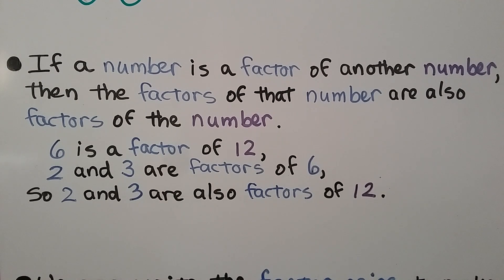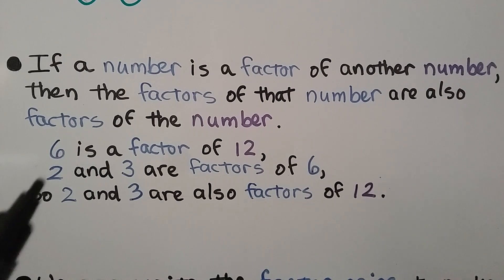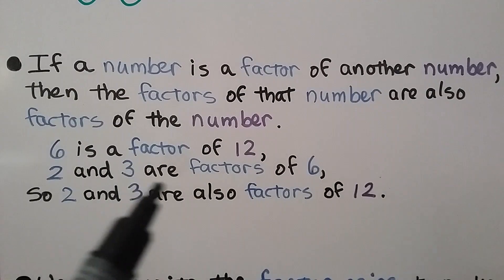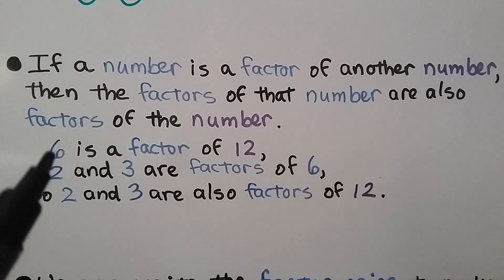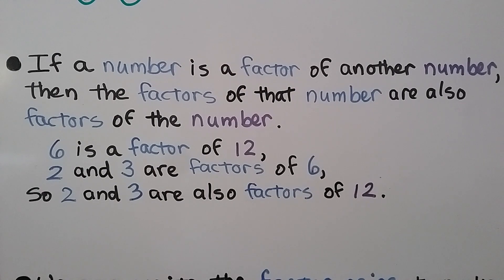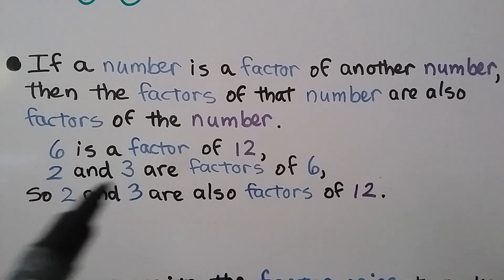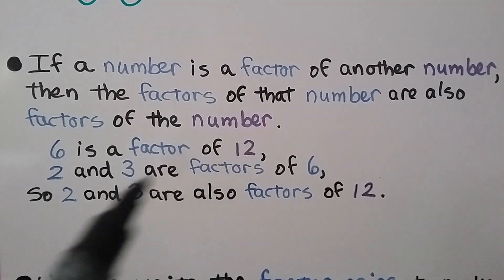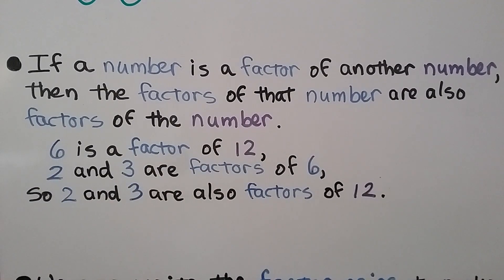If a number is a factor of another number, then the factors of that number are also factors of the larger number. For example: if 6 is a factor of 12, and 2 and 3 are factors of 6, then 2 and 3 are also factors of 12. The factors of 6 are factors of 12 because 6 itself is a factor of 12.